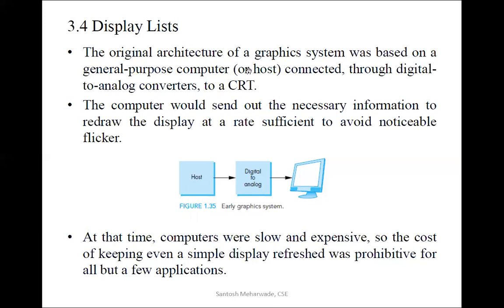The normal computer consists of input-output devices, CPU, and within that CPU it consists of a memory unit, control unit, and arithmetic and logical unit. These are the very typical components of the Von Neumann architecture. The computer would send out the necessary information to redraw the display at a rate sufficient to avoid noticeable flickering. To see an image continuously on screen, we have to refresh the display content each and every time to get a flicker-free image.